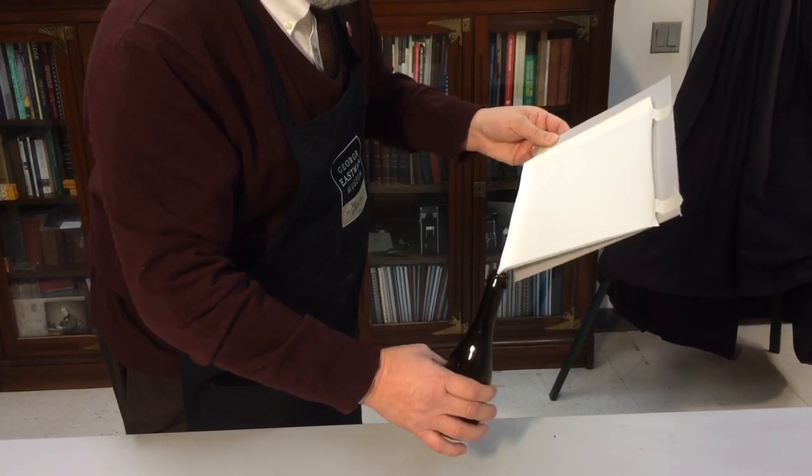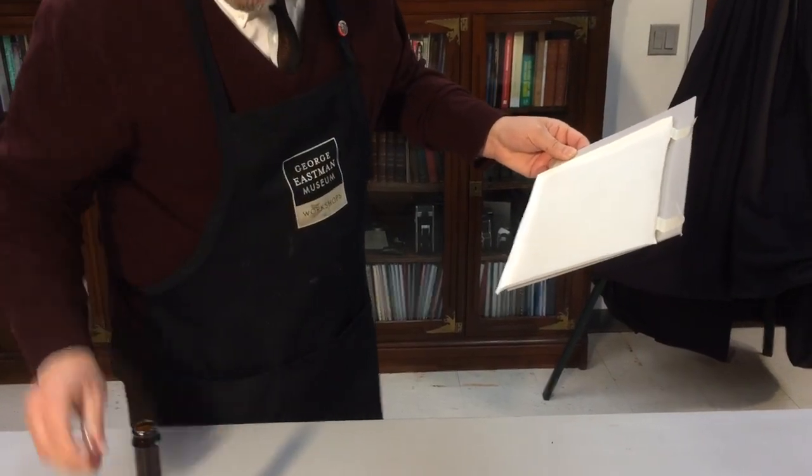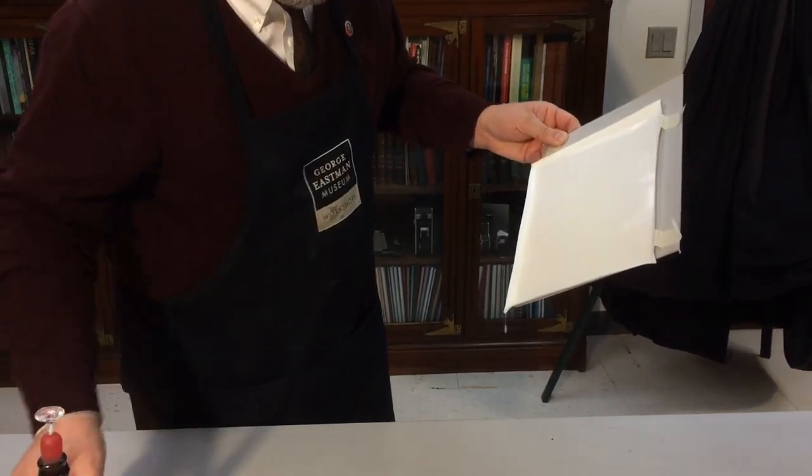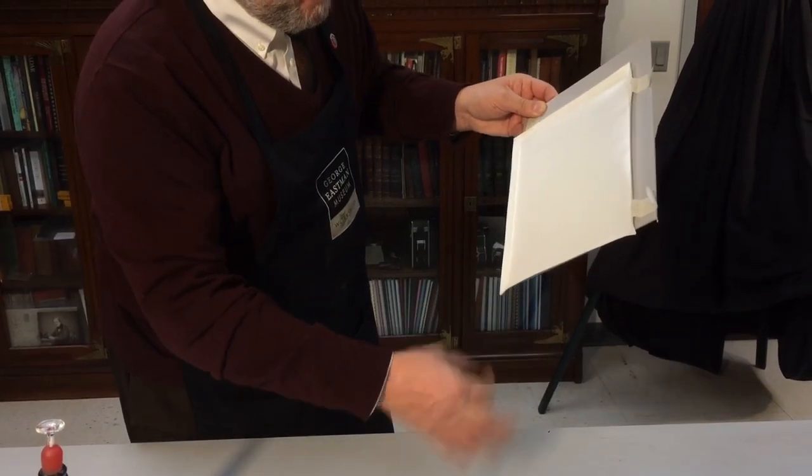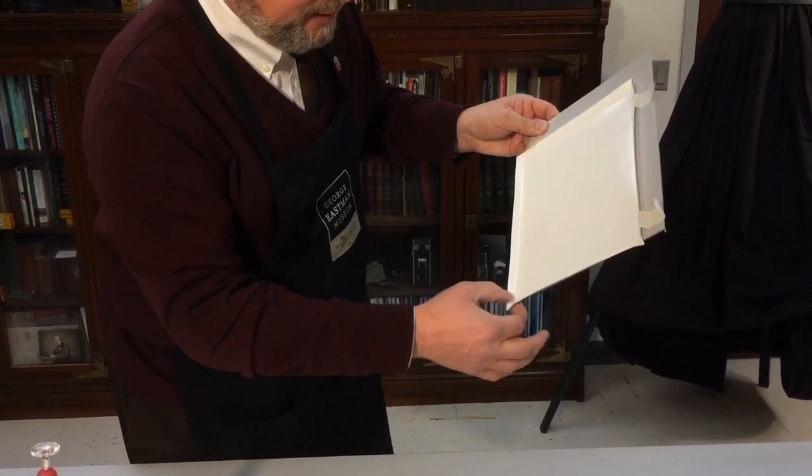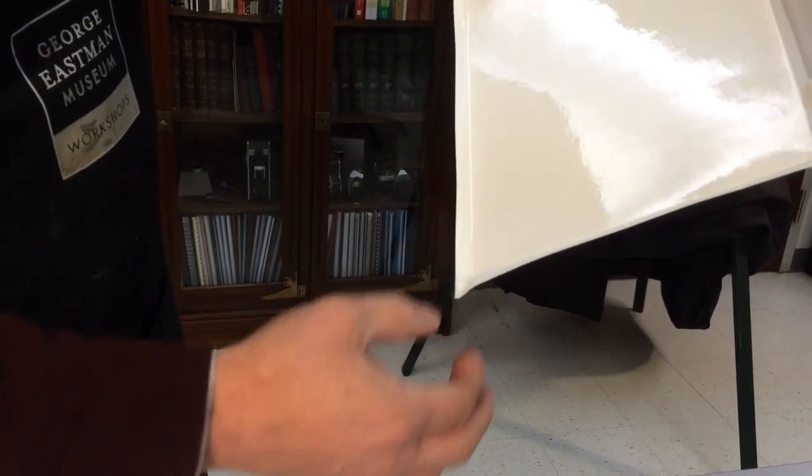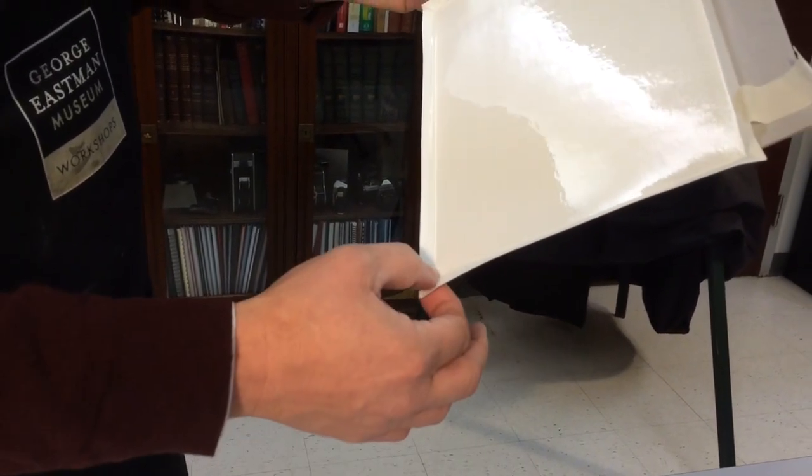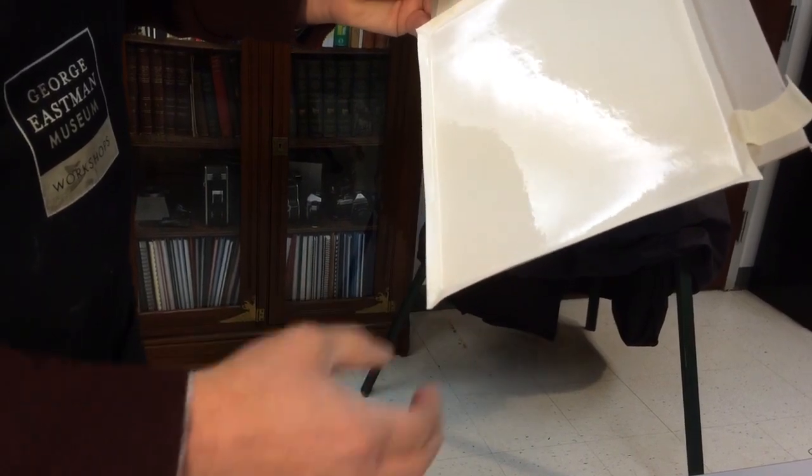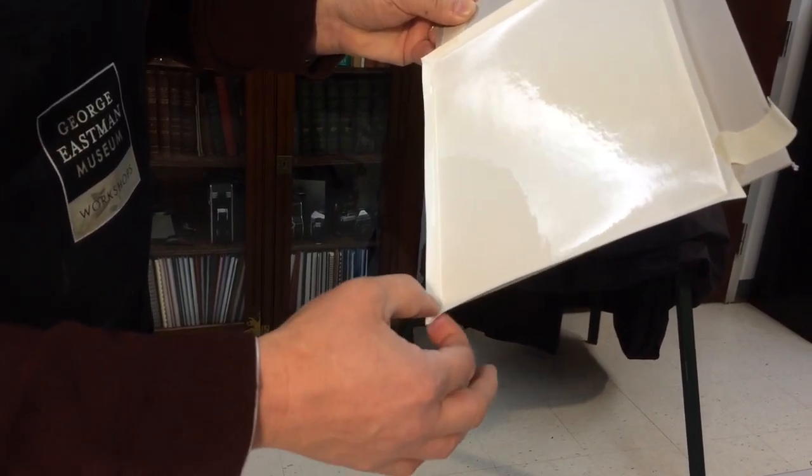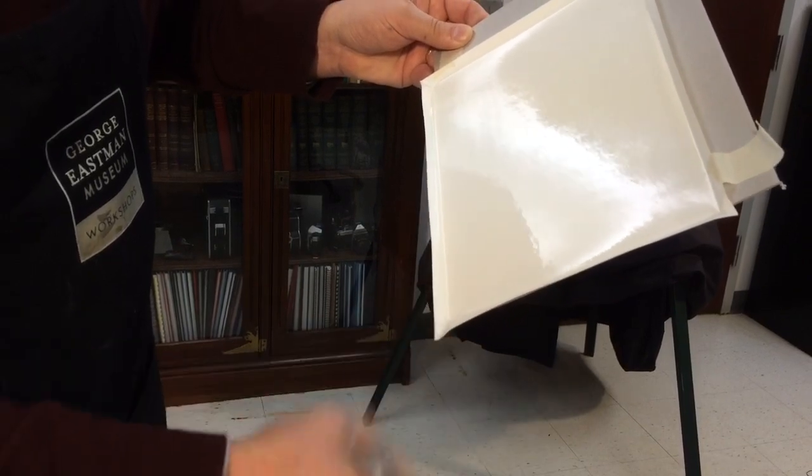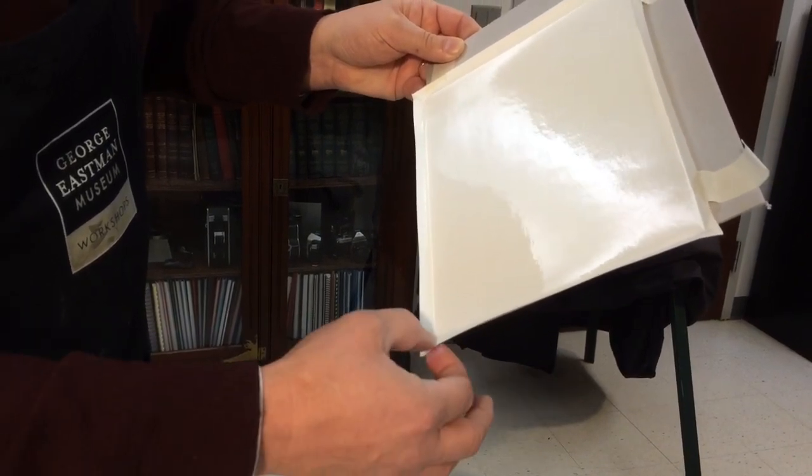So that is coated enough. And there will still be some collodion that will drip from that corner. And what I'm going to do is I'm just going to keep pulling that off. Your fingers won't stain with this because the silver is bound up. It's very easy to clean off with alcohol. You don't really need rubber gloves.